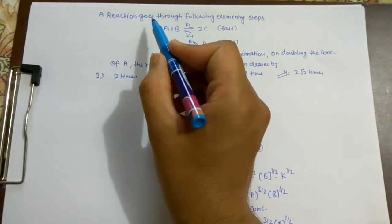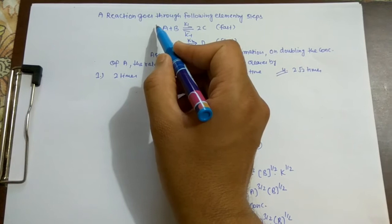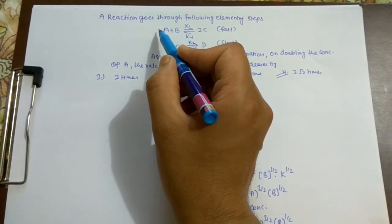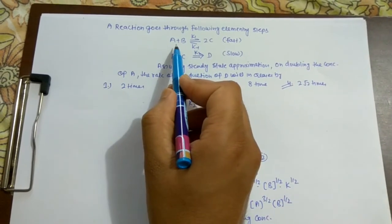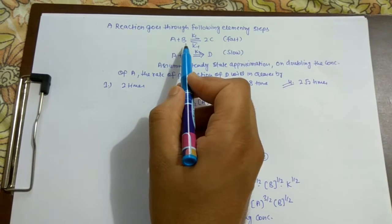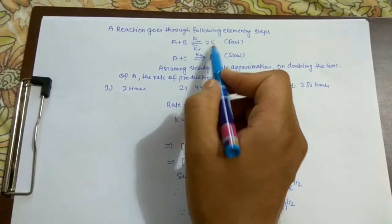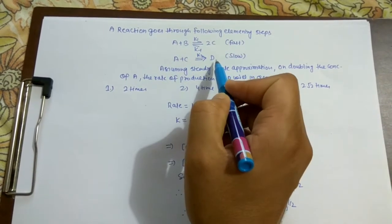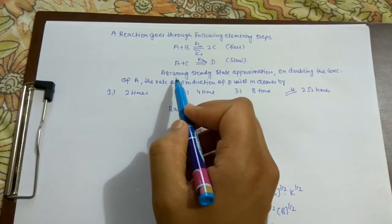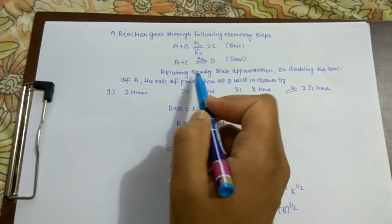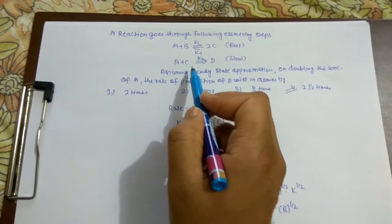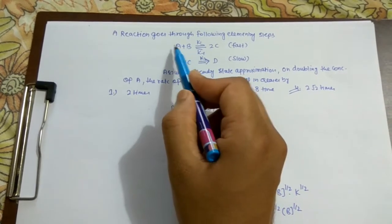Today we are going to discuss steady state approximation for different types of reactions. We have a reaction A + B that gives 2C, and this is further converted into D. It is given that steady state approximation is applied on C.